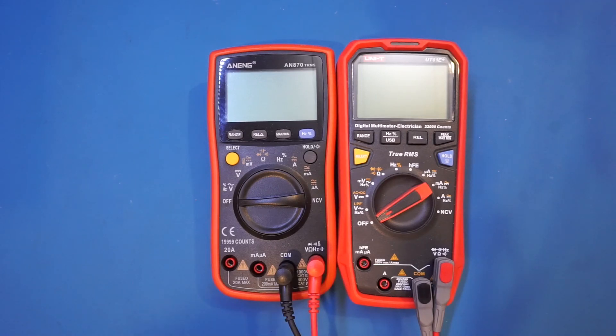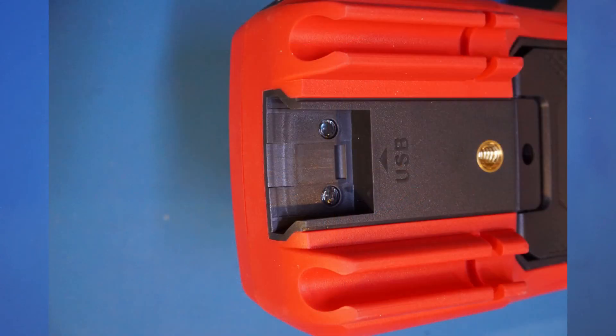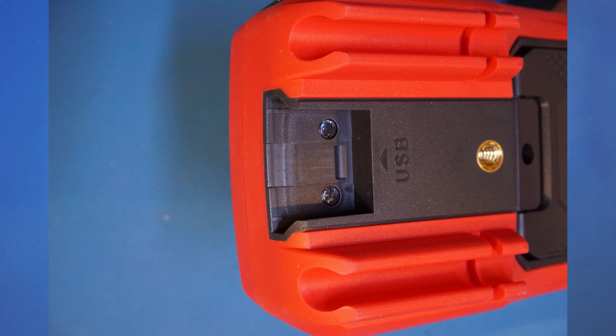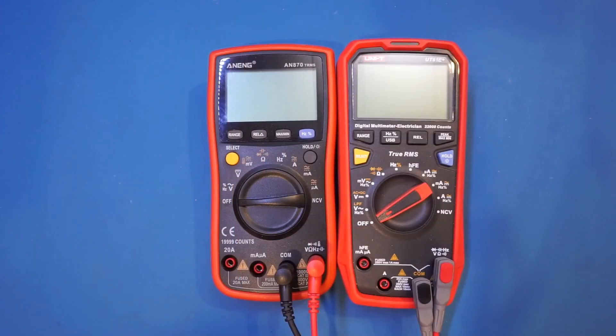Off the bat, I want to make it clear that these two meters are technically not in the same league. For instance, the UT61E Plus is a 22,000 count meter with bar graph, whereas the ANA70 is a 19,999 count meter without the bar graph. The UT61E Plus offers PC connectivity and the ANA70 does not. Also, the UT61E Plus offers AC plus DC measurement mode, which comes in handy where both components are present, and the Anung A70 does not offer AC plus DC measurement.